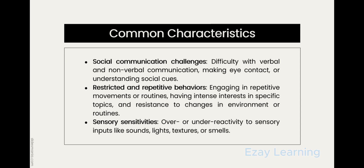Coming towards the common characteristics of ASD: social communication challenges, restricted and repetitive behavior, and sensory sensitivities. For social communication challenges, people with ASD have difficulty with verbal and non-verbal communication, making eye contact, or understanding social cues. The restricted and repetitive behaviors refer to having intense interest in specific topics and resistance to any kind of change in their environment or routines.